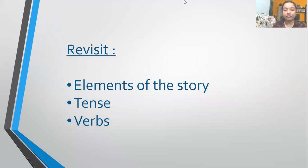The main topics that we will be revisiting are elements of the story, tenses and verbs. So elements of the story, as we already know, is nothing but what makes a story a story. So it's the plot, it's the characters, it is the antagonist, the protagonist, the conclusion, how the story ends, basically the beginning of the story.